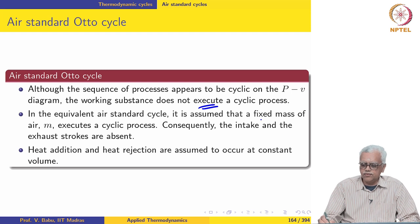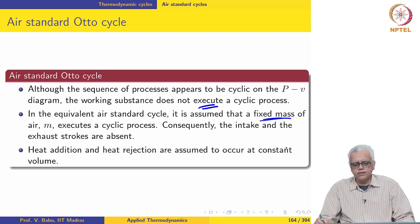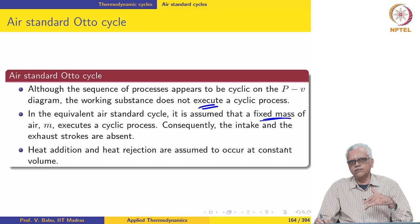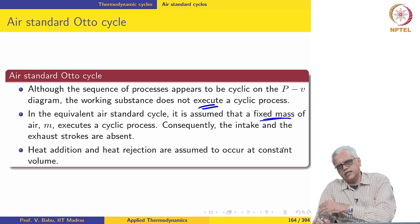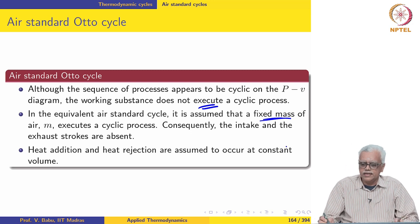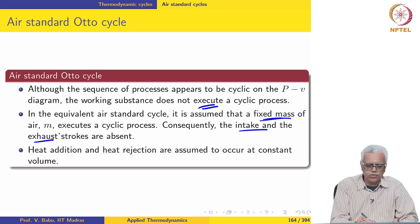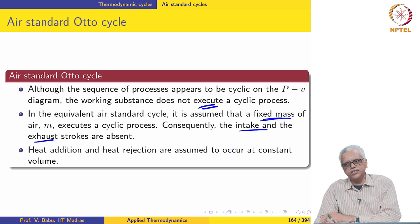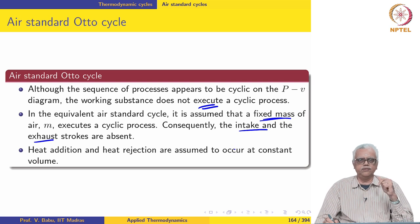We assume there is a fixed mass of air M which executes a cyclic process because the air inside the cylinder is fixed. We need not take in fresh air or send out combustion products, since it is clean air — meaning the intake and exhaust strokes are absent. The air standard Otto cycle is thus a two-stroke cyclic process, whereas the actual SI engine executes four strokes.